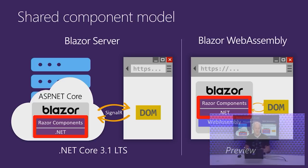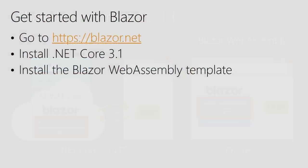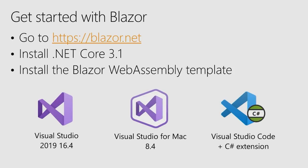Both hosting models share the same component model, meaning you can use the same components whether writing Blazor Server or Blazor WebAssembly apps, and easily switch between them. To get started, go to blazor.net and install .NET Core 3.1. For tooling, Visual Studio 2019 16.4 includes Blazor support. Visual Studio for Mac 8.4 just shipped. You can also use Visual Studio Code with the C# extension.